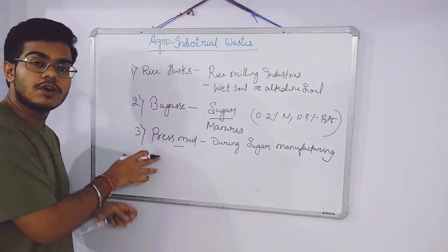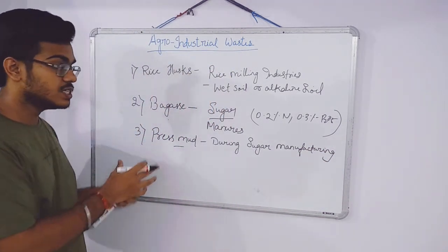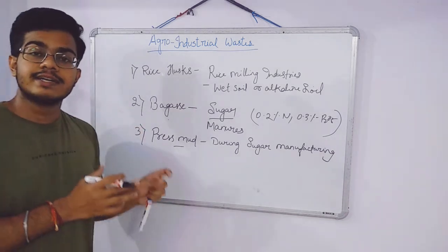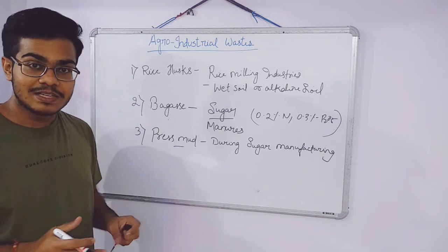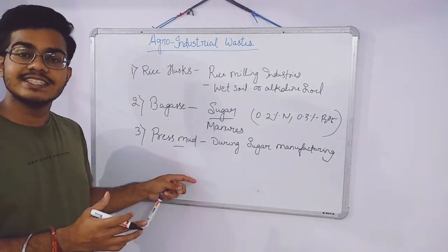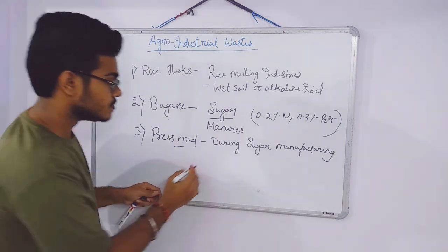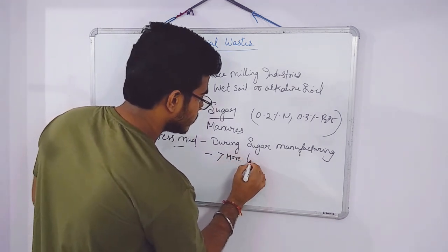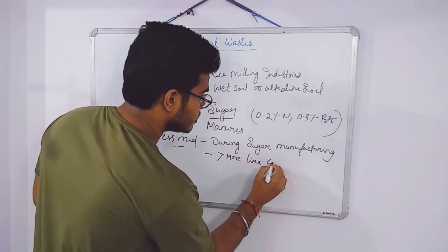The most important advantage of press mud is we can use it in acidic soil. It contains more amount of lime so it helps in decreasing the acidity of the soil. It contains more amount of lime content.